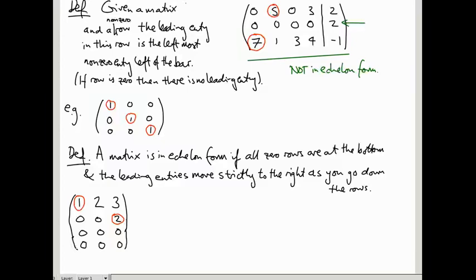The reason for the word 'echelon' is that when you have a matrix in this form, you can see there's a staircase of zeros at the bottom — that's the characteristic sign of an echelon matrix. The word echelon comes from the French word 'échelle', meaning stairs.